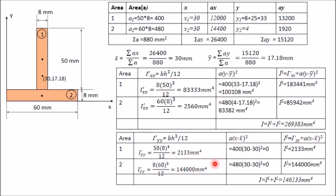For Iy, we use A(x − x̄)². Here x₁ = 30 and x̄ = 30, so (x₁ − x̄)² = 0. Similarly x₂ = 30 and x̄ = 30, so (x₂ − x̄)² = 0 as well. Therefore the parallel axis correction term is zero for both areas. The moment of inertia of area one about the centroidal y-axis is 2133 mm⁴.